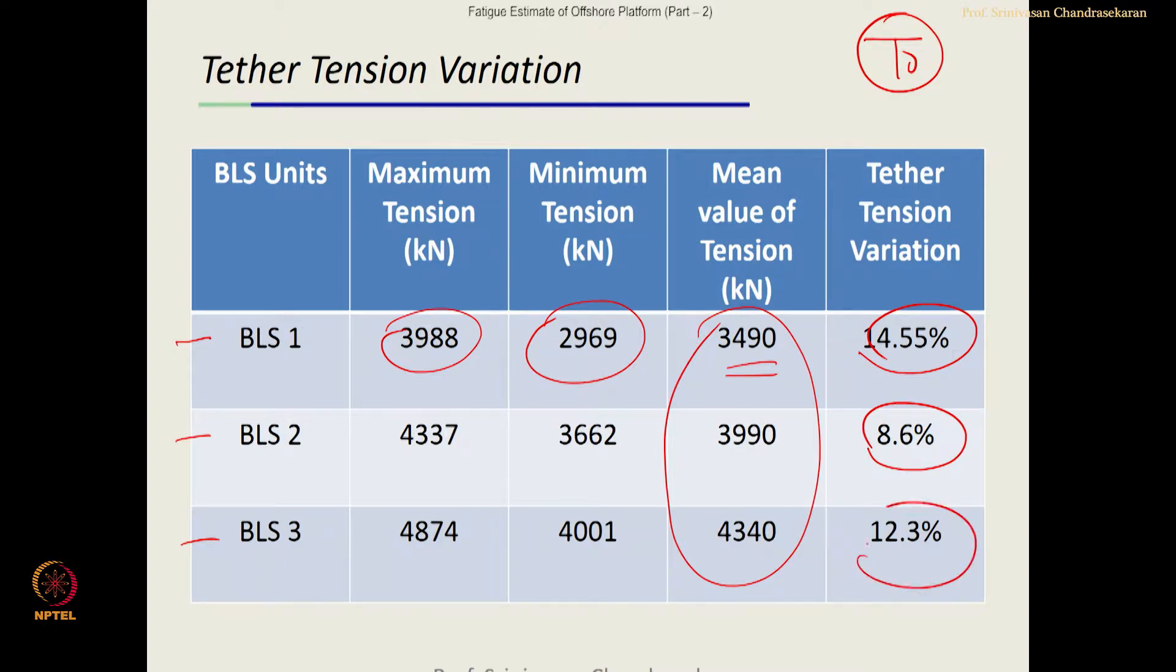The percentage variation in this is also not equal. It means all the three legs undergo dynamic tether tension variation, they are not equal.